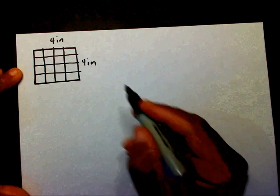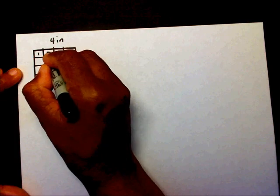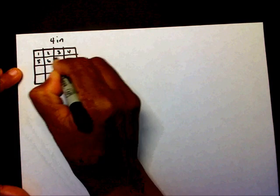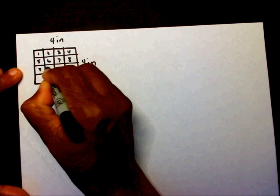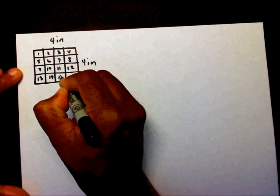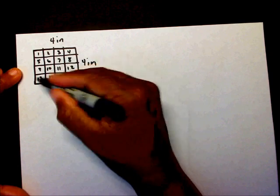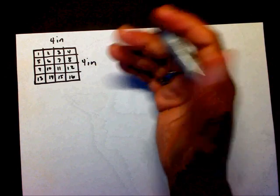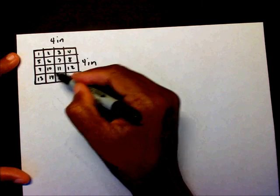And that created one, two, three, four... sixteen squares. So the area of this square is going to be sixteen.